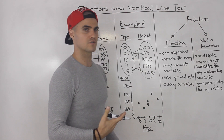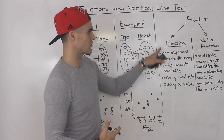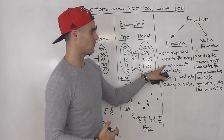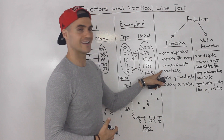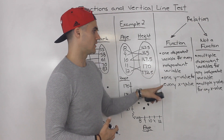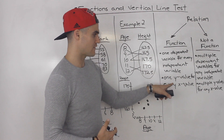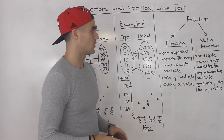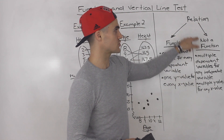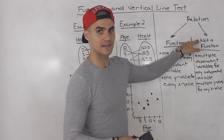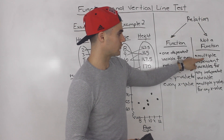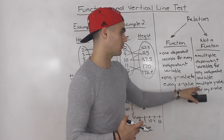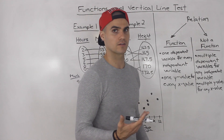The definition for each: a function has one dependent variable for every independent variable — so one y value for every one x value. Versus something that's not a function: a relation that's not a function is going to have multiple dependent variables for any independent variable, so it could have multiple y values for any x value.